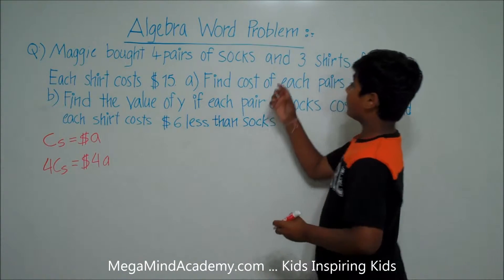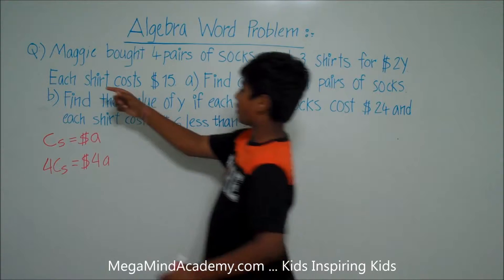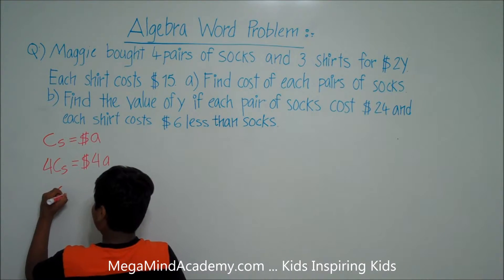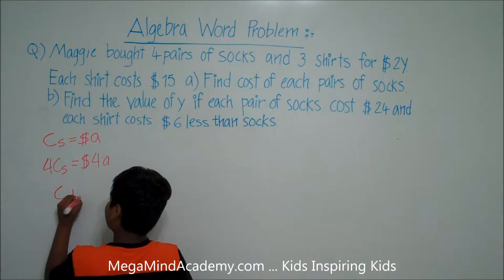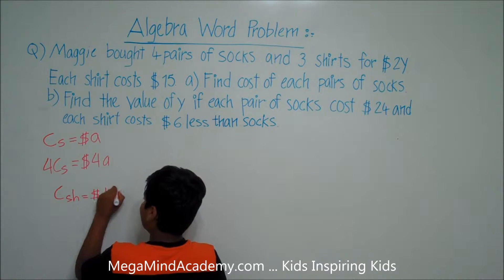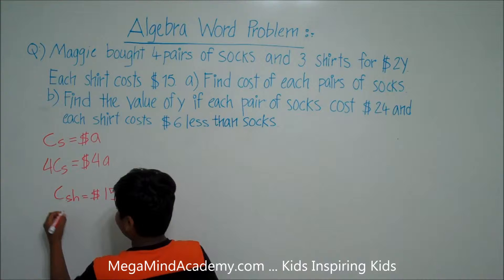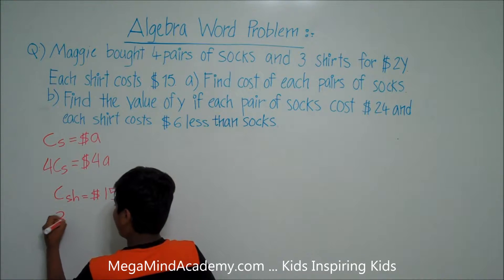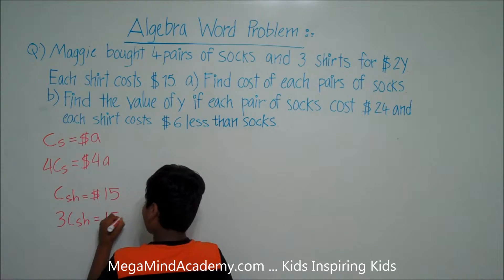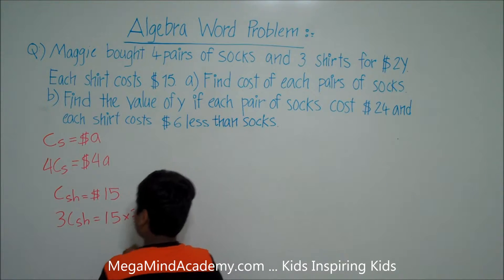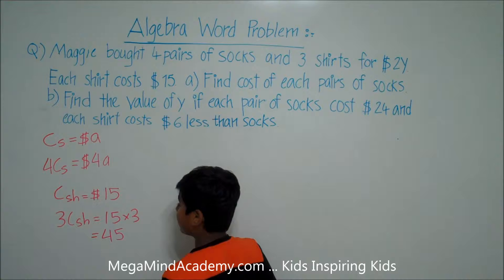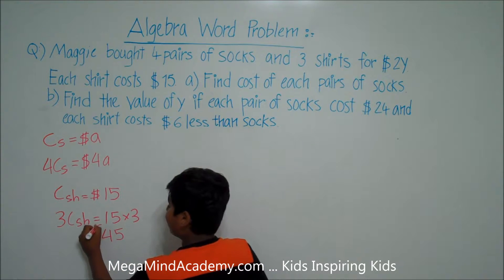Now we know that she bought three shirts, and each shirt costs fifteen dollars. So the cost — C for cost, S for shirt — equals fifteen dollars. And she bought three shirts, so the cost of three shirts is equal to fifteen dollars times three, which equals forty-five dollars.